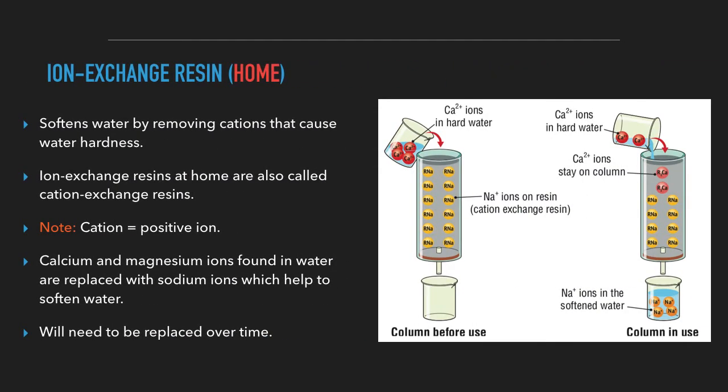An ion exchange resin at home will soften water by removing cations that cause water hardness. Ion exchange resins at home are also called cation exchange resins. A cation is a positive ion. Calcium and magnesium ions found in water are replaced with sodium ions. This helps to soften the water. Ion exchange resins will need to be replaced over time.